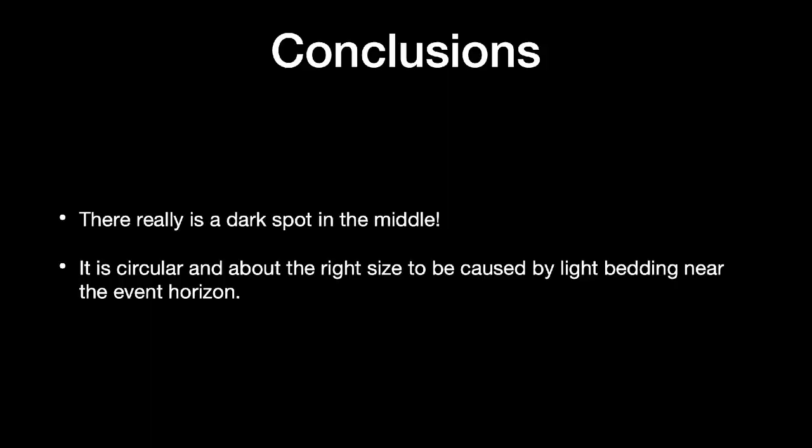So what's my take-home conclusion from this? There really is a dark spot in the middle and it's circular and about the right size to be caused by light bending near the event horizon. Is it really seeing the black hole? Well, you're not going to see the black hole. Light doesn't come out of black holes. So this is about as best you can ever do, is see the effect of the black hole's gravity on the light from things coming very close to it. But it is very reassuring to me that at long last we've seen there actually is a dark bit right in the middle of these things, because any previous data has only ever seen bright bits in the middle. So is it solid proof that they've seen an event horizon? No, but I'd say it's getting really quite close to convincing.